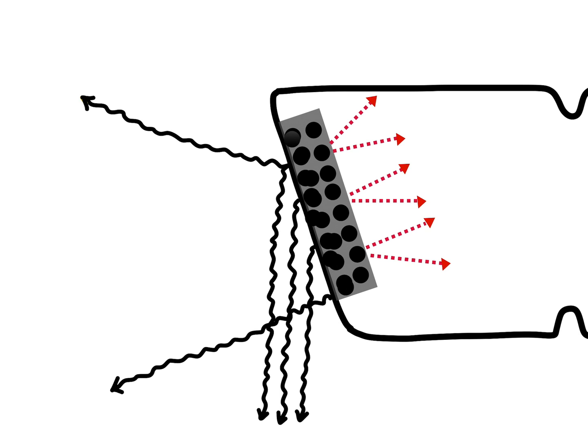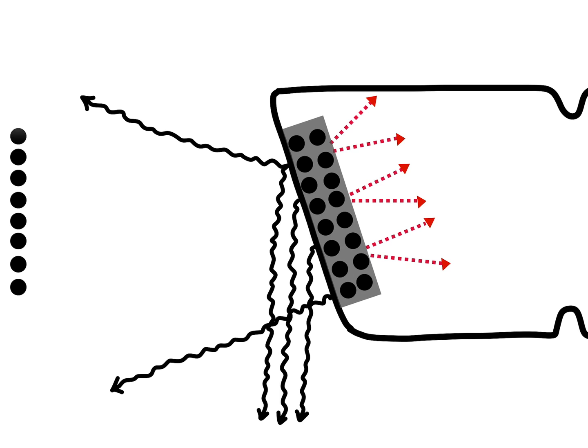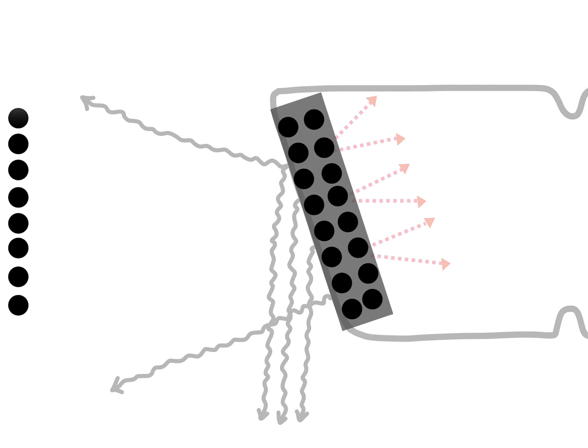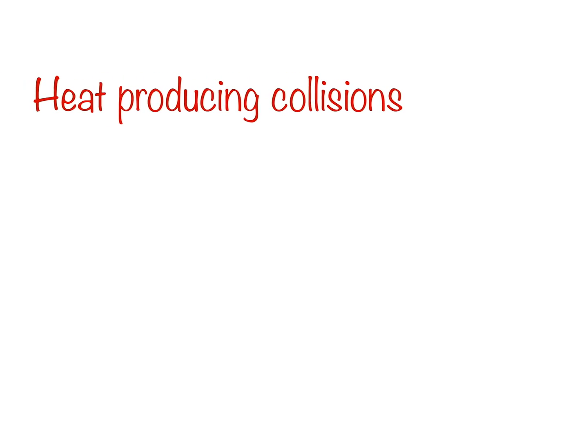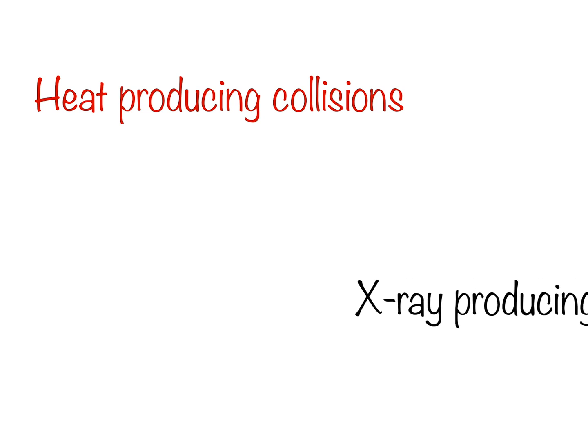But what happens exactly when the high-speed electrons bombard the target? So let's go in depth and visualize the interactions at atomic level. There occurs two major types of collision. They are collisions which produce heat and collisions which produce X-rays.